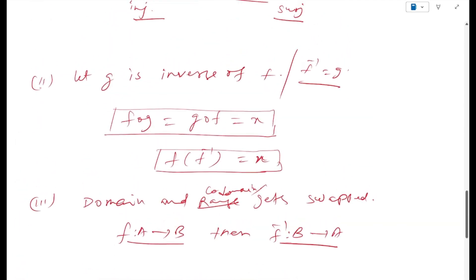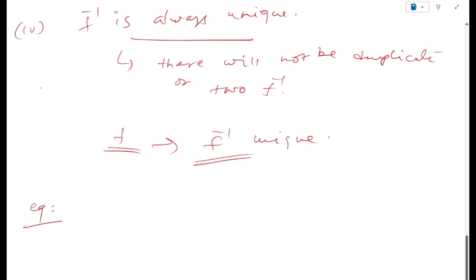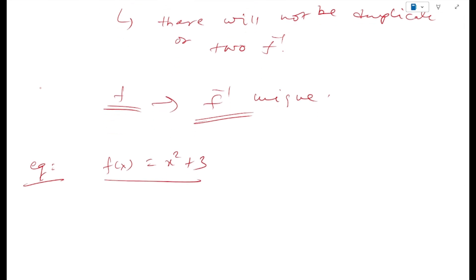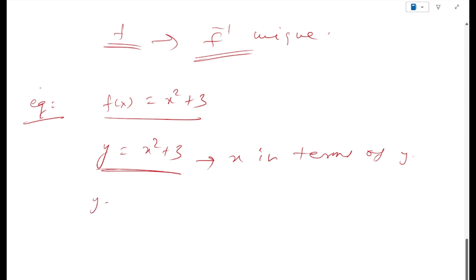Let's take an example to understand what we just covered. Suppose f(x) = x² + 3. We write y = x² + 3 and we try to calculate x in terms of y. How do we do that? We subtract 3 from both sides to get x² = y − 3, and then x = ±√(y − 3).